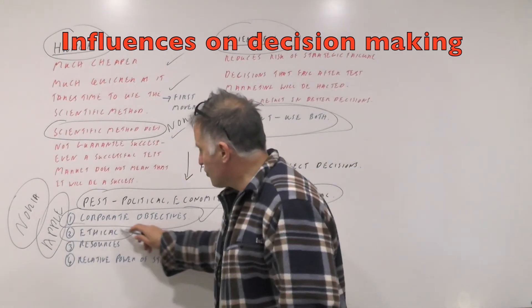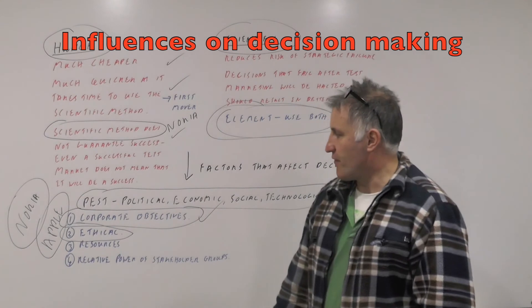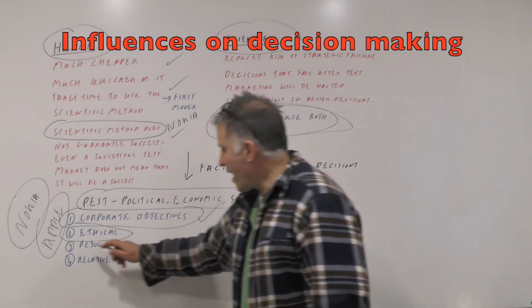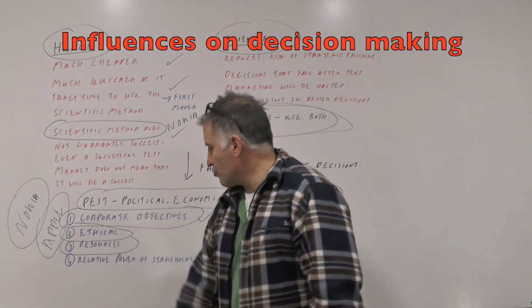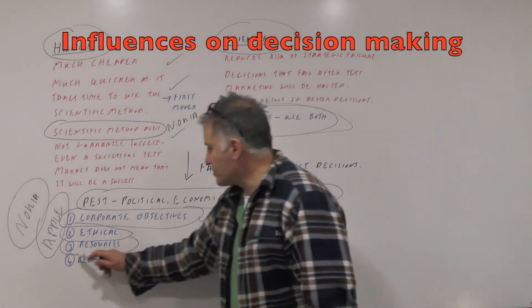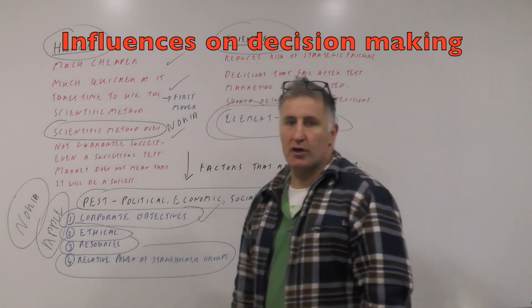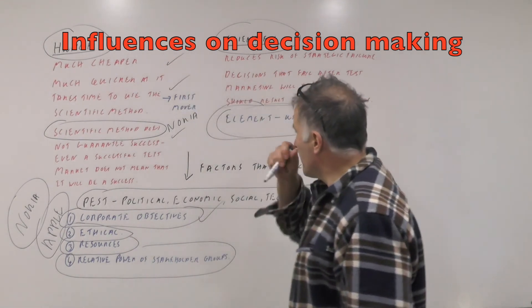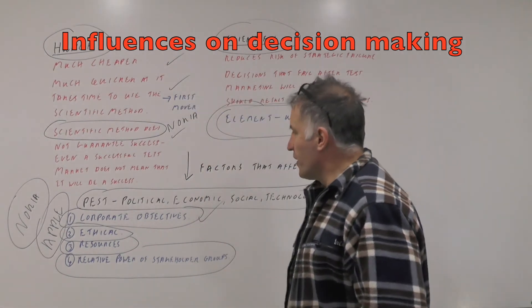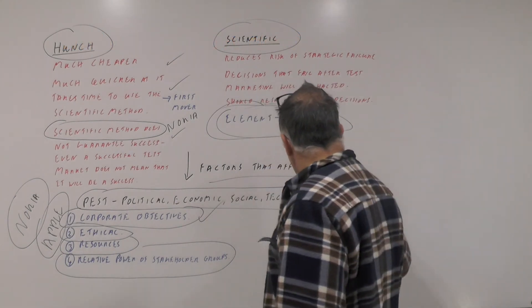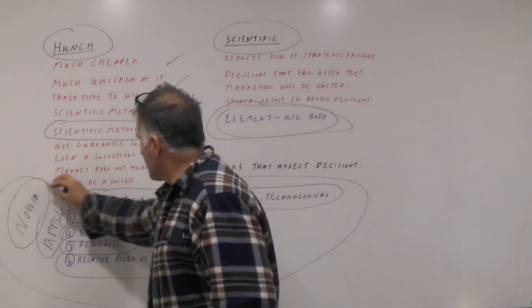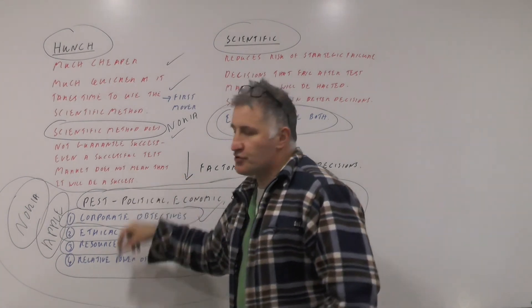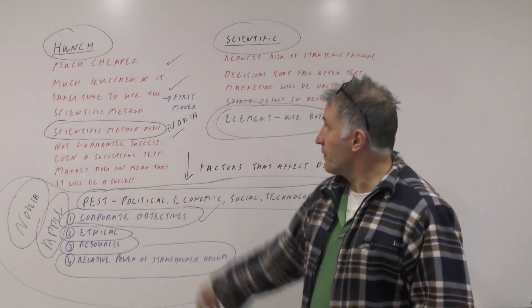These days when we do corporate social responsibility, it may be affected by ethical factors. How many resources have you got? And the relative power of different stakeholder groups. So, is your hunch scientific? These things here will influence the way in which things are done.